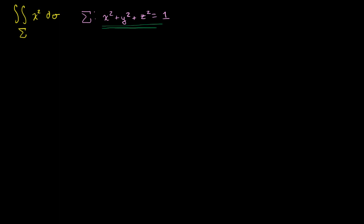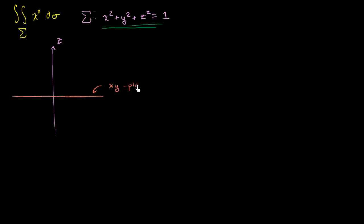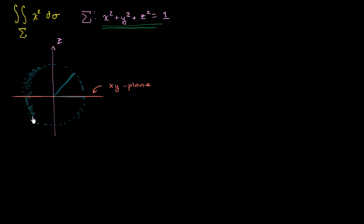Let's think about the unit sphere. I'm going to take a side view of it. This right over here is our z-axis, and over here I'm going to draw not just the x or the y-axis — this is going to be the entire xy-plane viewed from the side. Our unit sphere might look something like this. The radius at any point is 1, and this is a sphere, not just a circle.